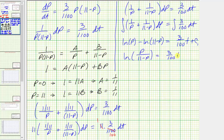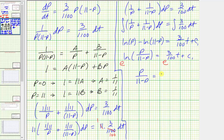To solve for p, we exponentiate both sides: e raised to the natural log of p divided by the quantity 11 minus p equals e raised to the power of three one-hundredths t plus c₁. The left side simplifies to p divided by the quantity 11 minus p. On the right, we get e raised to three one-hundredths t times e raised to c₁. Since e raised to c₁ is just another constant, we call it c₂. So p divided by the quantity 11 minus p equals c₂ times e raised to the power of three one-hundredths t.